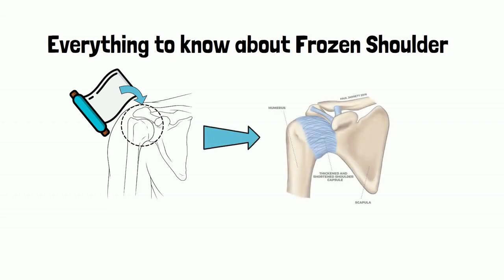Alright, let's break it down. Picture this: your shoulder joint is wrapped up tight like saran wrap. That's essentially what's happening with frozen shoulder. It's a condition where the connective tissue around the shoulder joint becomes thickened and tight, limiting movement.